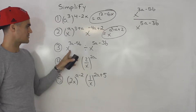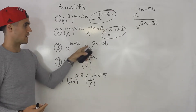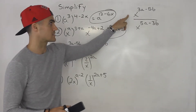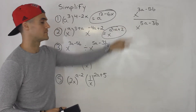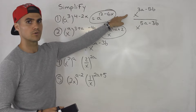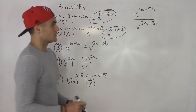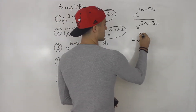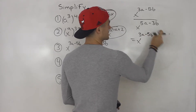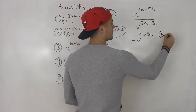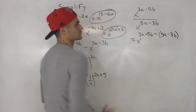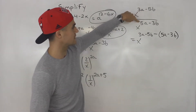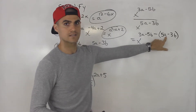Moving on to number three, we got x to the power of three a minus five b divided by x to the power five a minus three b. This could be shown as a fraction. Since we're dividing two exponents with the same base, we subtract the exponents. So we'll have x to the three a minus five b, and then we'd be subtracting that whole exponent. The bracket is crucial because we're going to distribute that negative one inside the bracket.